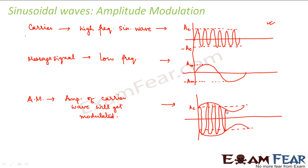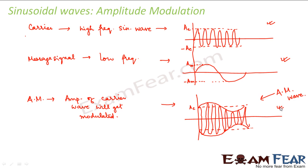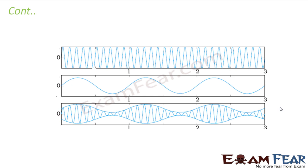The frequency of the modulated wave is still the same as the carrier wave's frequency — only the amplitude varied. This is known as an amplitude modulated wave. This wave is a high frequency wave, and our aim was to convert the low frequency message signal into a high frequency wave, and we did that. This is how amplitude modulation takes place.